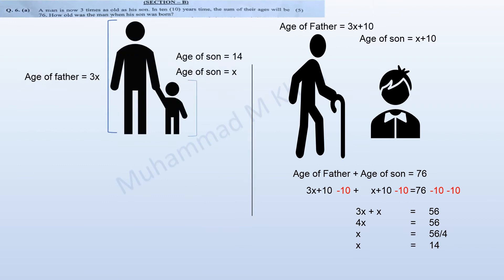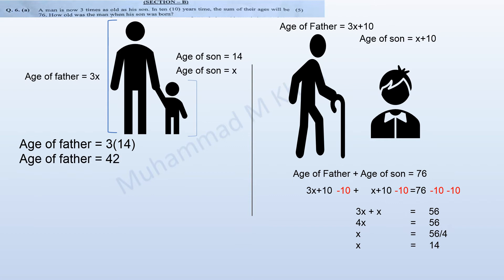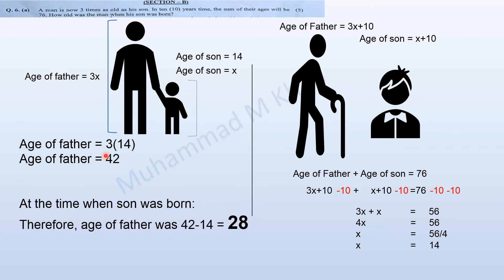So if the age of the son is 14, the age of the father will be 3 times 14, which is 42. But the question doesn't end here — we are required to calculate how old the man was when his son was born. Basically, we have to go 14 years back, so we deduct 14 from 42. The result is 28.